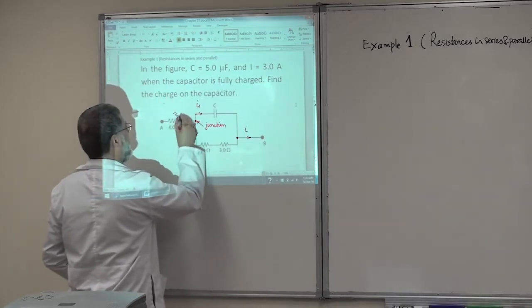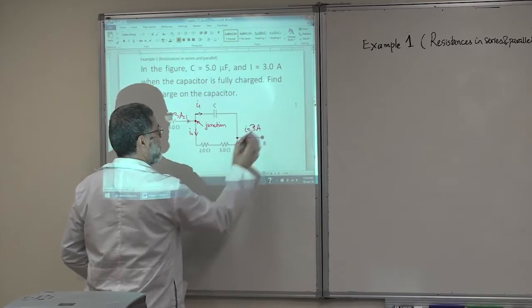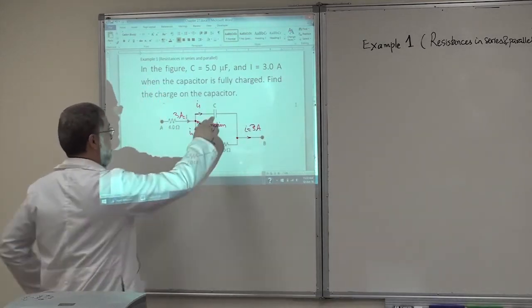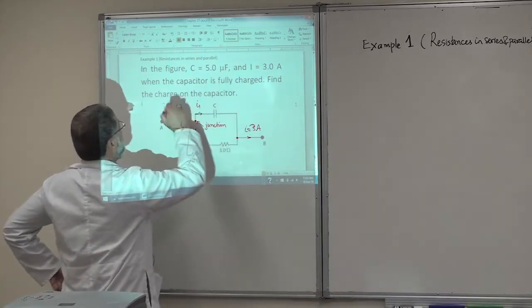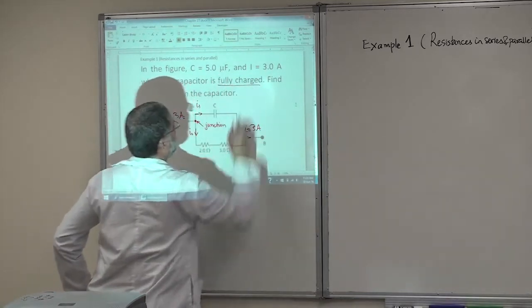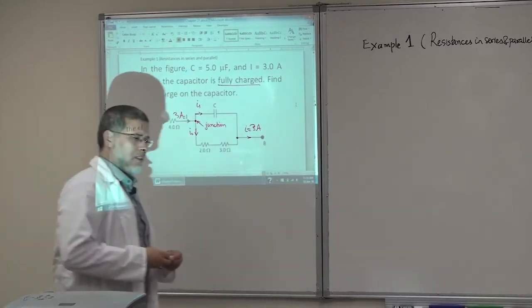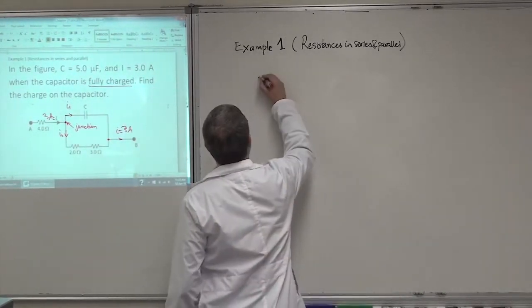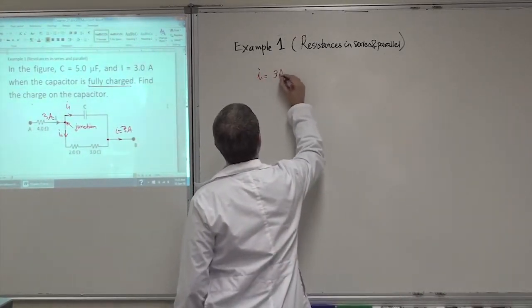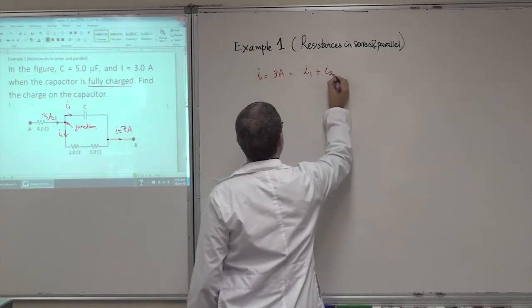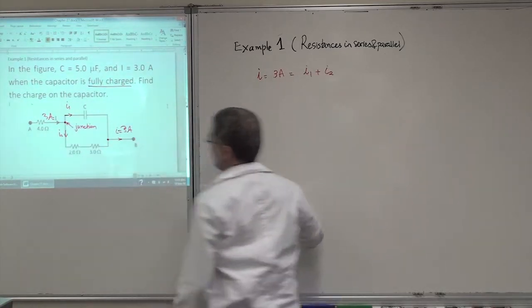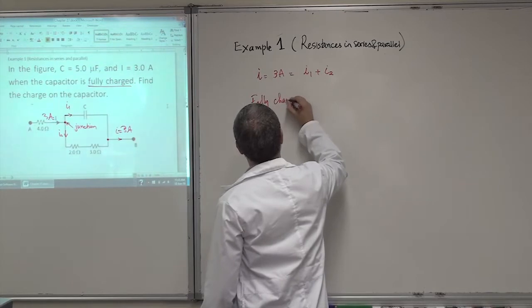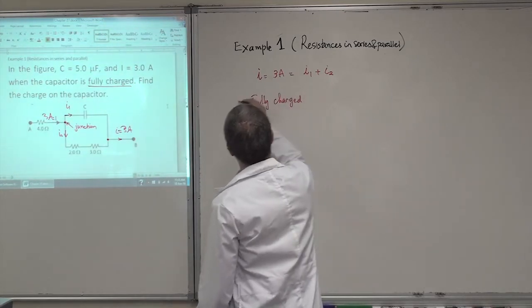The total current is three amperes here, and three amperes here. So you have I1 and I2. There's also a capacitor of 5 microfarads. We are talking about the situation when the capacitor is fully charged.